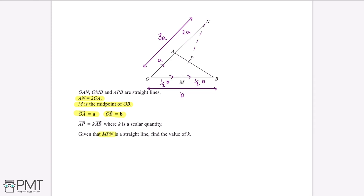We can also draw in the line MPN. The first vector we can work out is the line A to B. So vector AB will be equal to negative OA plus OB. OA is equal to A, so negative OA is equal to negative A, and OB is equal to B. Therefore AB equals negative A plus B.